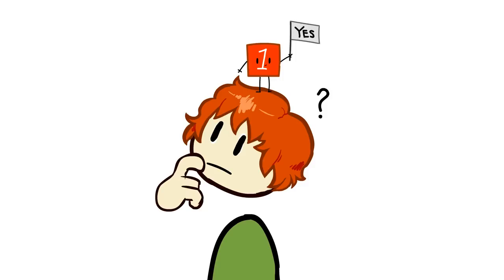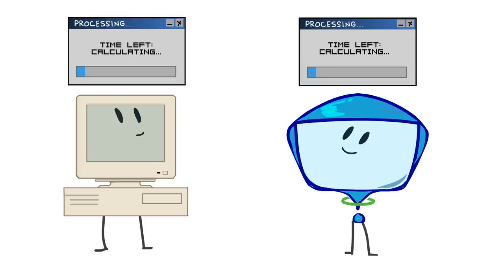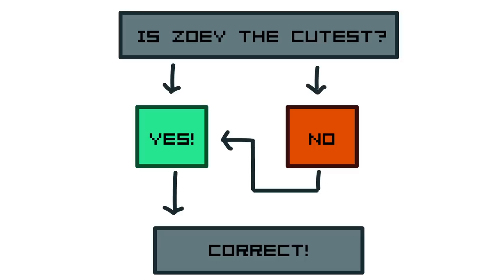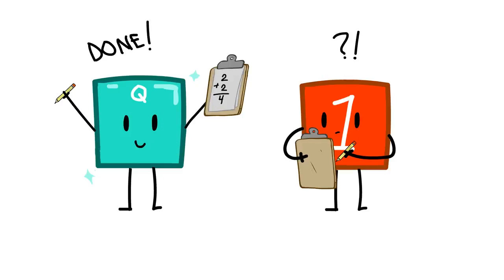So what does this all mean? It means that quantum computing is not a replacement for classical computing. In fact, any given operation on a quantum computer will probably be slower than performing that same operation on a classical one, at least for the foreseeable future. But it also means that for certain tasks — specific questions which we know how to tease out — we can perform certain computing tasks using exponentially fewer operations, meaning that even though individual operations may run more slowly, the actual task will be completed much, much faster.